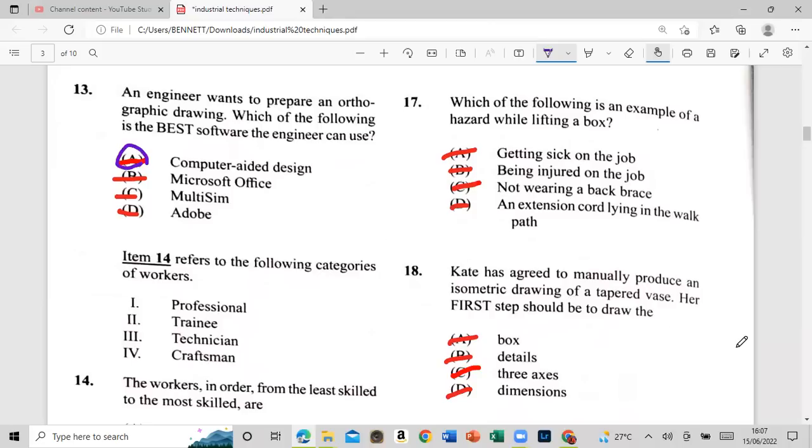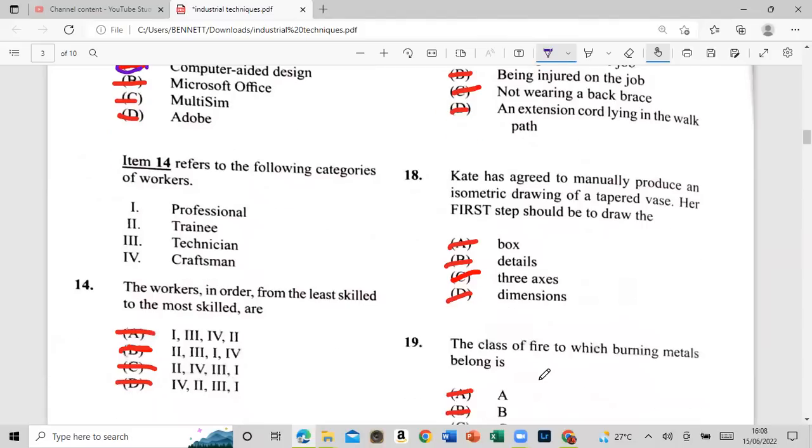So that is here. Number 14 refers to the following categories of workers: professional training, technician, and the craftsman. Workers in order from the least skill. All right, so the least skill to the most skill, to the most skill. Let's start off release. The training will be the first one, not the least. Technician: one, three, not four. So that left away on B, B. All right, so 14 is. Number 15, let me see if you could.